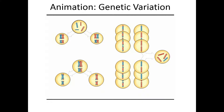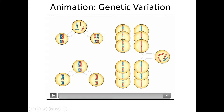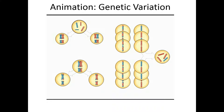The last segment of our lecture on meiosis is going to be about genetic variation. In sexually reproducing organisms, three processes lead to most genetic variation: independent orientation of chromosomes in meiosis, crossing over of chromosomes in meiosis, and random fertilization.